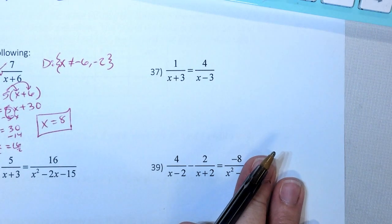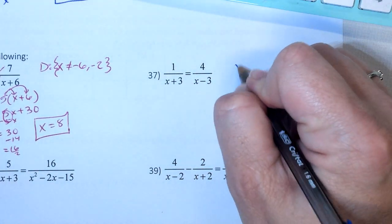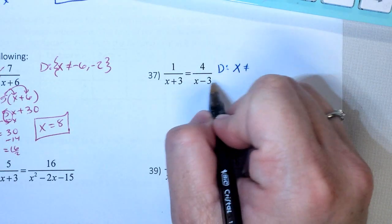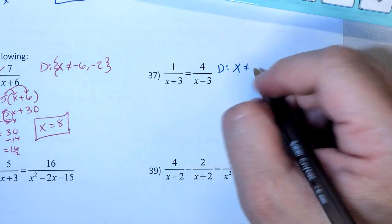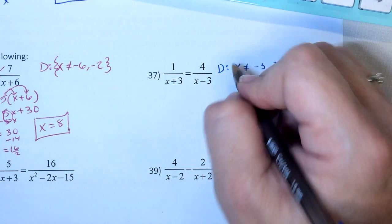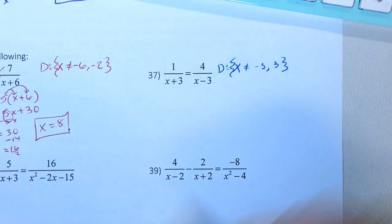Same concept on this one. X cannot equal, because of your domain, negative 3 or positive 3, because what would cancel a positive 3 would be a negative 3, and what would cancel a negative 3 would be a positive 3. So we know that x cannot equal negative 3 or positive 3.